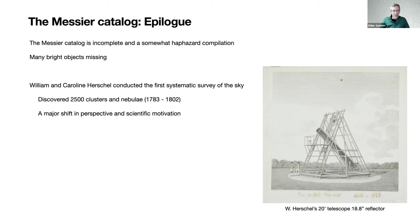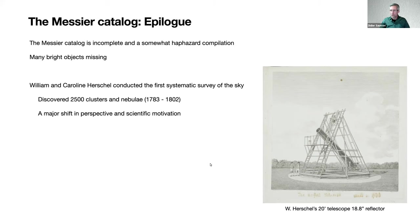The catalog is incomplete and is a somewhat haphazard compilation — many bright objects he could have seen with his telescopes are missing. Things changed quite a bit later when William Herschel and his sister Carolyn Herschel conducted the first systematic survey of the sky, inspired by Messier's work. Herschel was also a telescope maker who built some of the most powerful telescopes of the time. With his 20-foot telescope with a 19-inch mirror, he made a systematic survey and discovered with his sister 2,500 clusters and nebulae over 20 years. Herschel really wanted to know what was out there in the universe, while Messier was much more focused on the solar system itself.